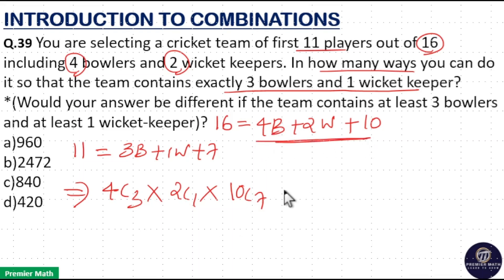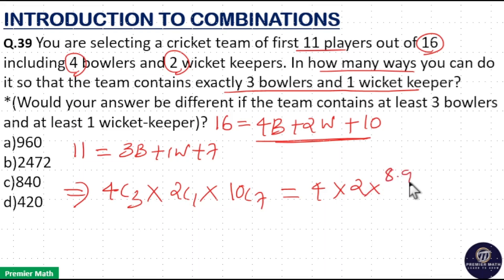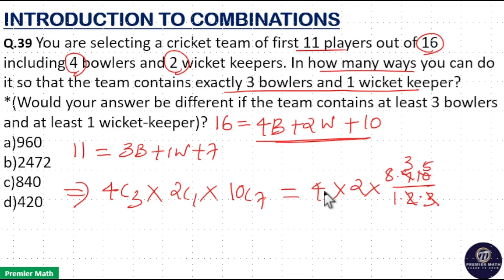So this is equal to: 4C3 is 4, 2C1 is 2, and 10C7 means 7 cancels, leaving 8 × 9 × 10 divided by 3 factorial. 3 goes 3 times into 9, and 2 goes 5 times into 10. Now 4 × 2 = 8, and this is equal to 960.